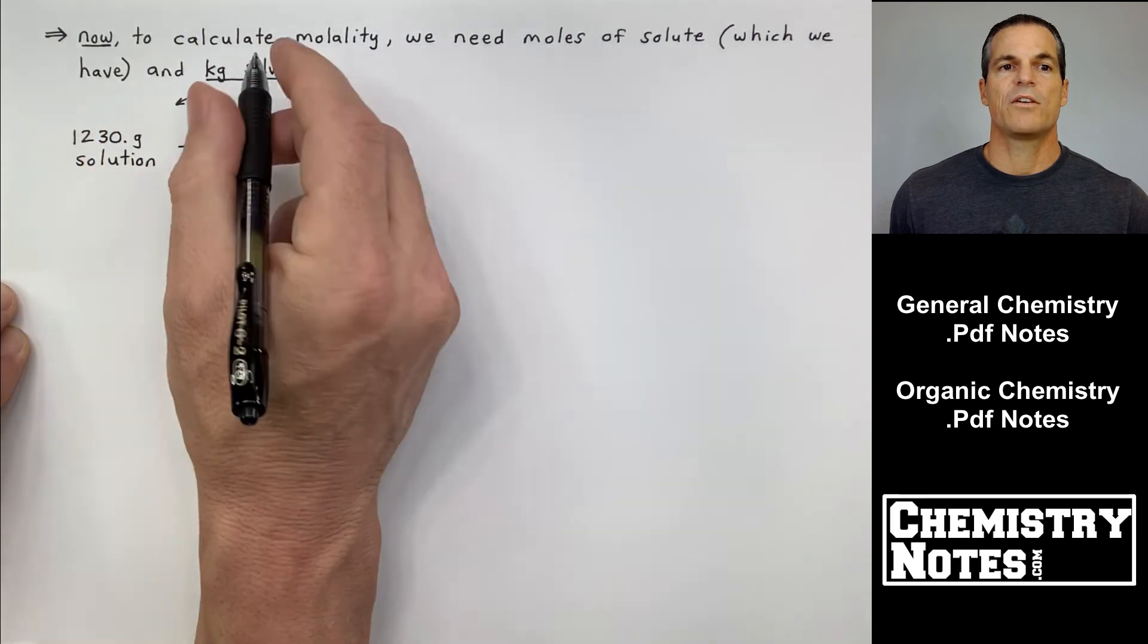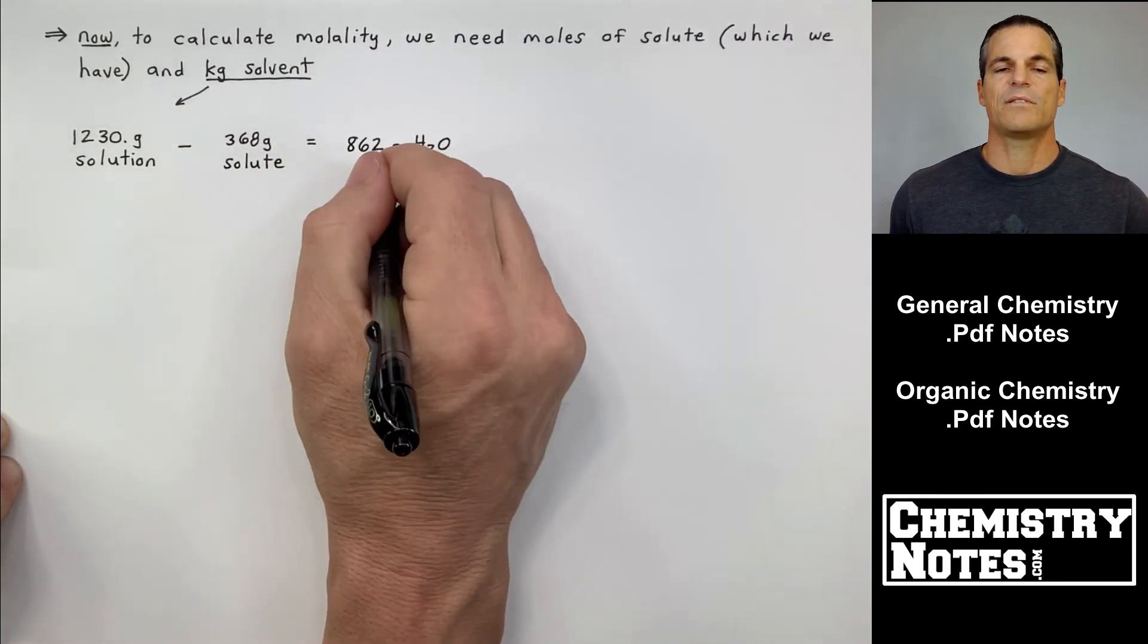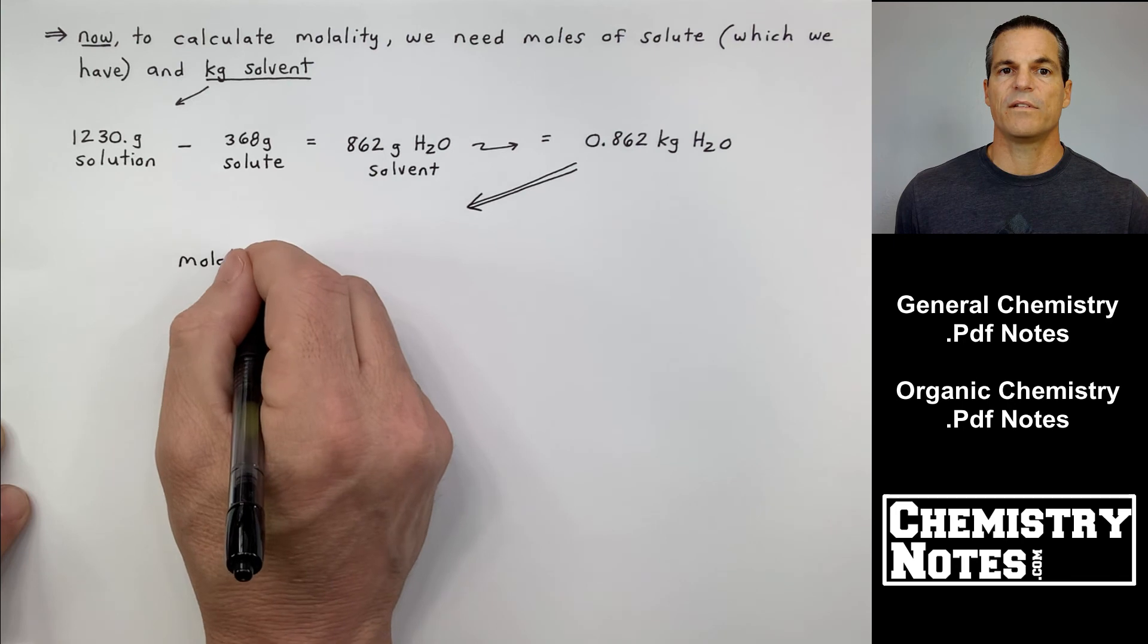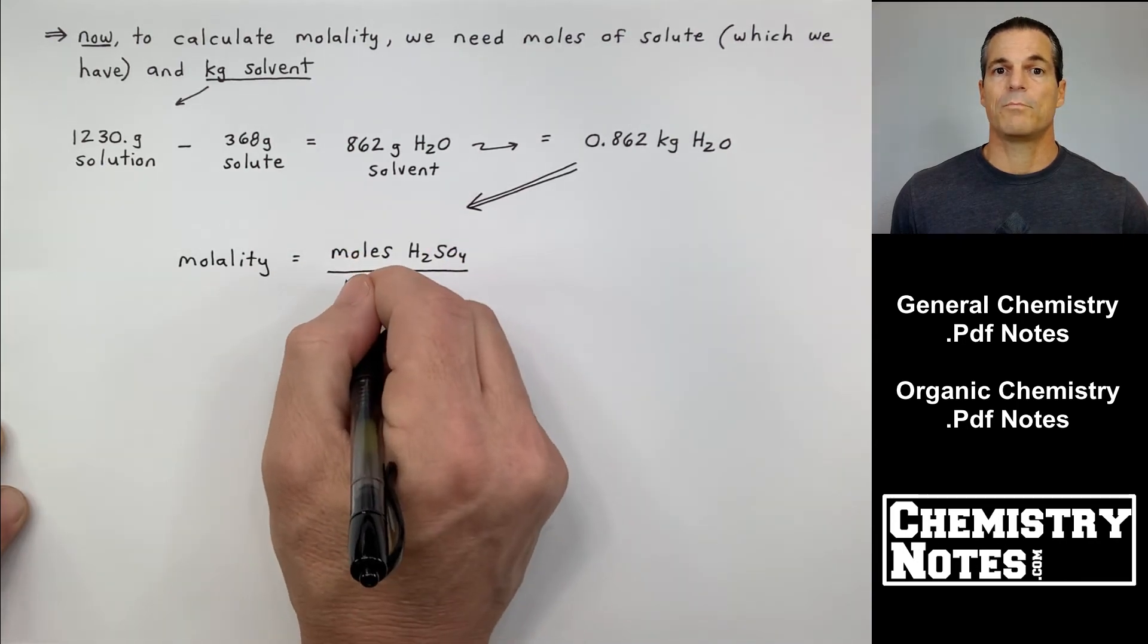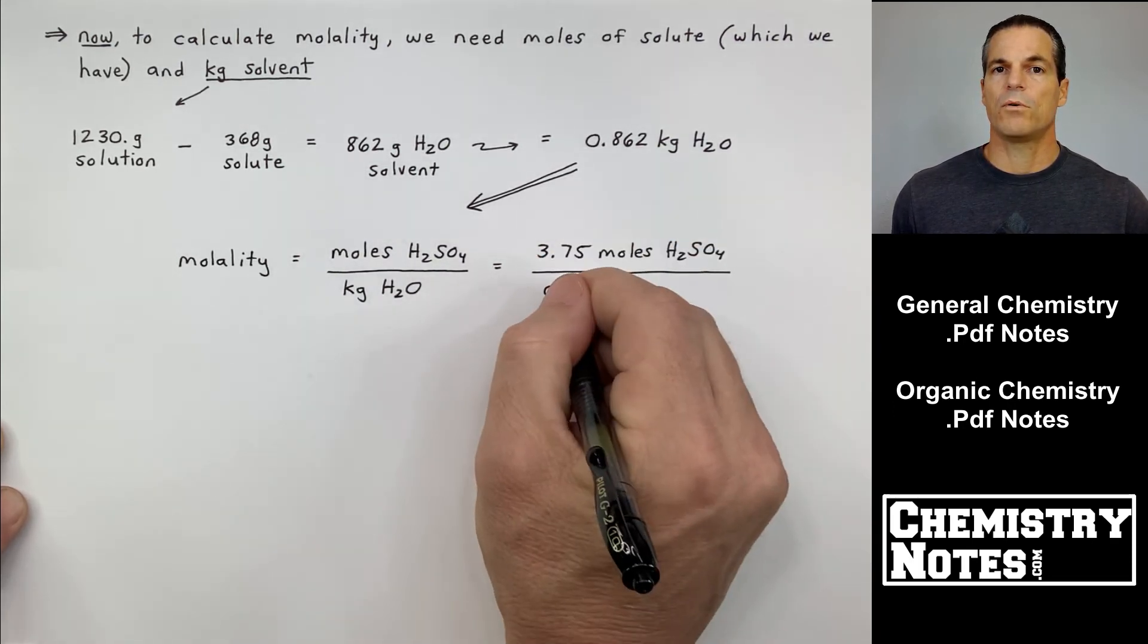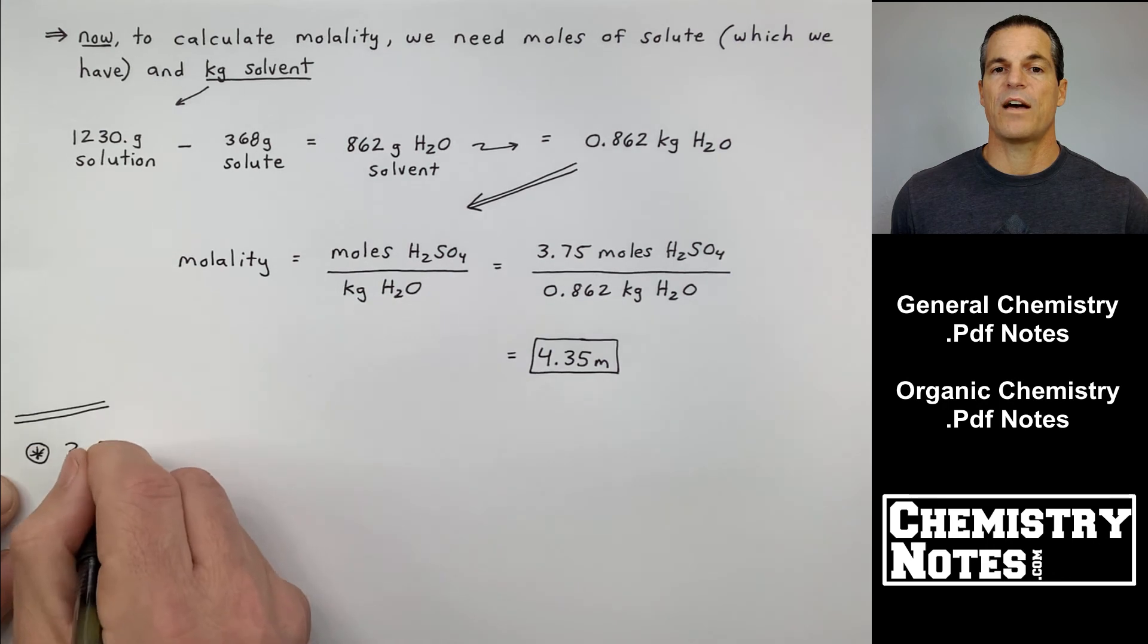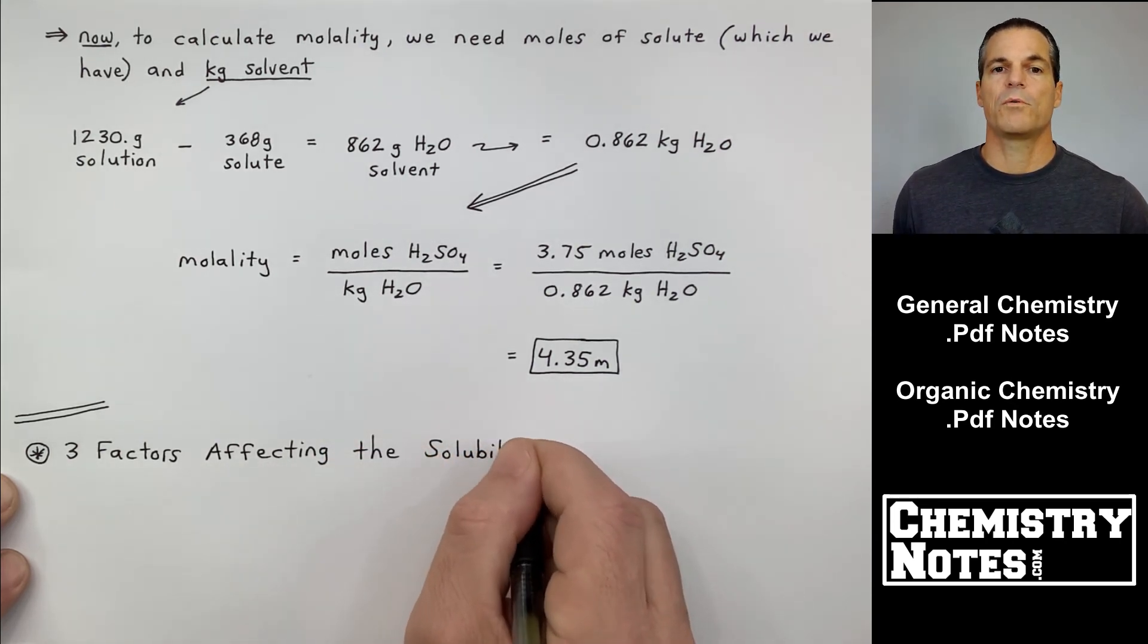So 1,230 grams of solution, if we just subtract the 368 grams of solute, that gives us 862 grams of whatever's left, and that's the solvent, water. 1,230 minus 368 gives me 862 grams of H2O solvent, and 862 grams equals 0.862 kilograms of water. So molality is 3.75 moles of H2SO4 divided by 0.862 kilograms of water, and that gives us 4.35 molal. Molality is new, so we should start to use it, 4.35 molal.